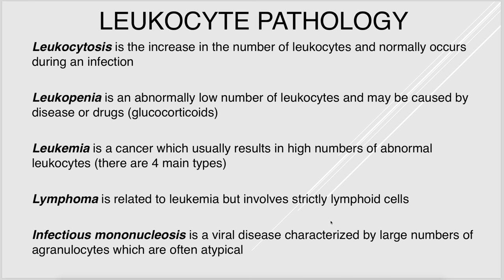Leukemia and lymphoma are related but different. Leukemia is a cancer that results in too many abnormal white blood cells coming from the bone marrow, whereas lymphoma involves only lymphoid cells and typically is focused in the lymphatics like the lymph nodes. Infectious mononucleosis is a viral disease most commonly caused by Epstein-Barr virus, and here you have very high numbers of agranulocytes that are typically atypical — if you look at them under the microscope, they are abnormal.